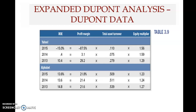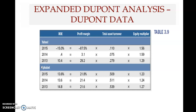Now let's apply the DuPont analysis by comparing two companies: Yahoo and Alphabet, which are competitors in the same industry. We are given ROE, profit margin, total asset turnover, and equity multiplier — a breakdown of ROE. This comparison serves as both a peer analysis (comparing competitors) and a trend analysis over time from 2013 to 2015.